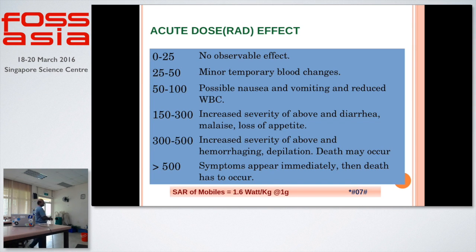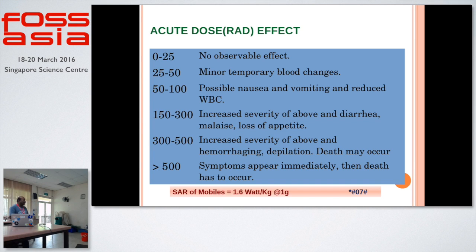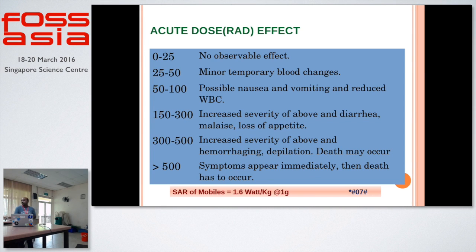Now consider the effects of dose rate. If you are taking radiations with a magnitude between 0 to 25 rem, nothing to worry about. If the radiation limit exceeds 25 to 50, minor temporary blood changes will take place. If it exceeds 50 to 100, then possibly nausea and vomiting will take place. If it goes beyond 140 to 300, then there is increased severity — diarrhea, malaise, or loss of appetite. Beyond 300 to 400 is considered most dangerous and may lead to death. At 500, the person will immediately die.